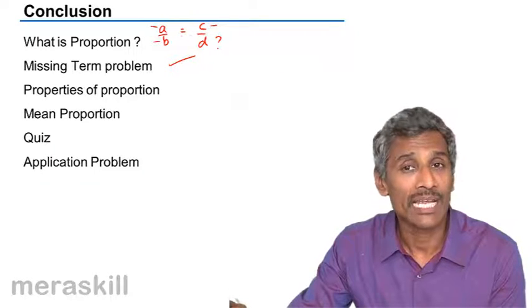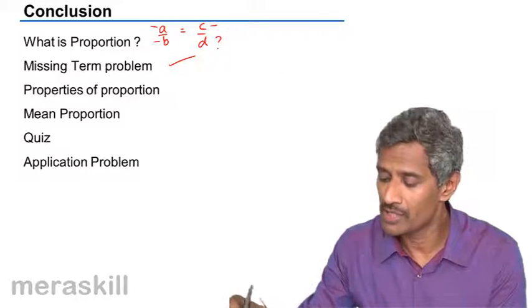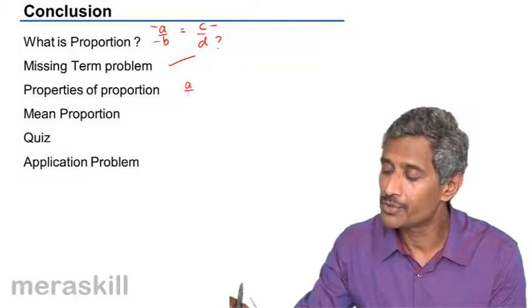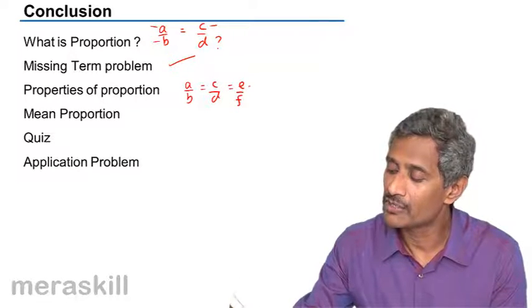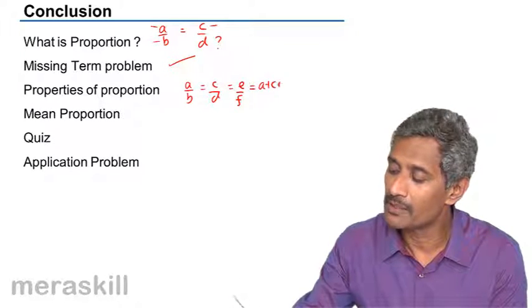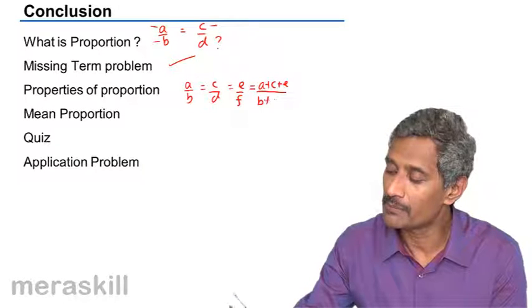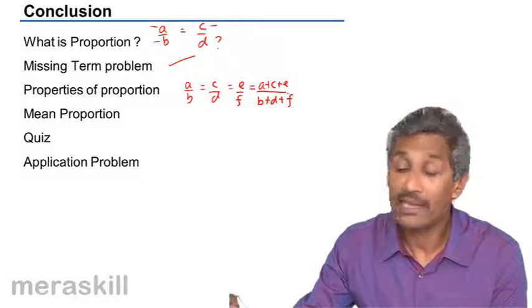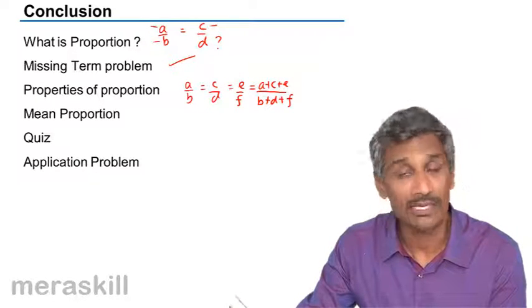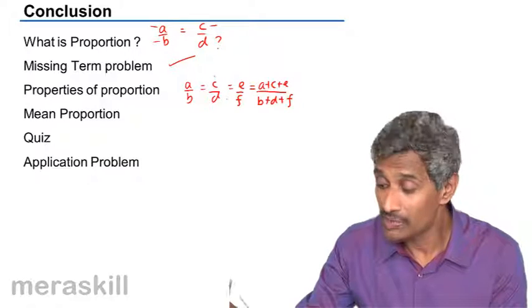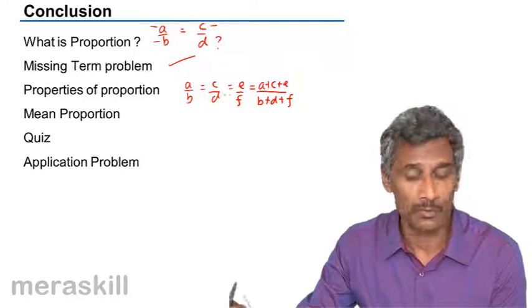And we did the addendo rule. If we have a large number of ratios a by b, c by d, e by f, then each of these will be equal to a plus c plus e upon b plus d plus f. Same way for subtrahendo: a minus c minus e is also equal to b minus d minus f. So, these were the basic properties of proportion.